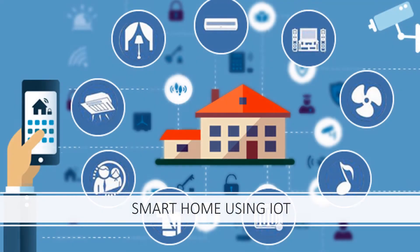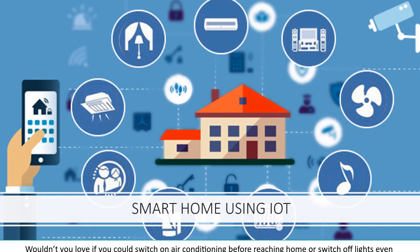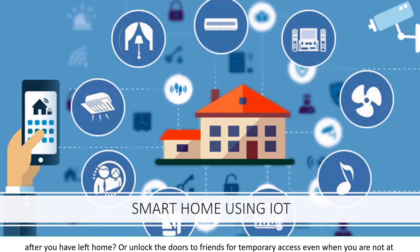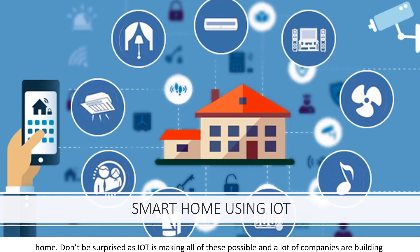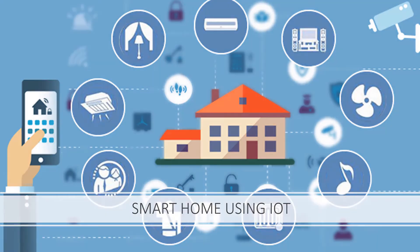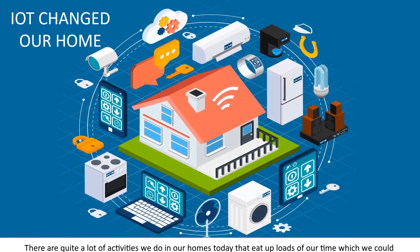Smart Home: wouldn't you love to switch on air conditioning before reaching home, or switch off lights even after you have left home? Or unlock the door for friends for temporary access even when you are not at home? IoT is making all of these possible, and a lot of companies are building products to make our life simpler and more convenient. There are quite a lot of activities we do in our homes today that eat up loads of our time, which we could have used on more productive things.